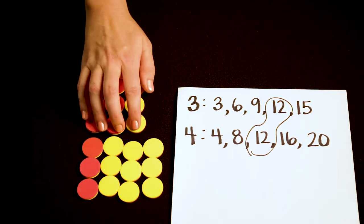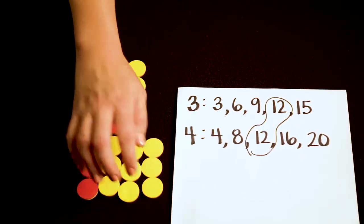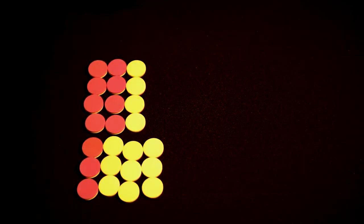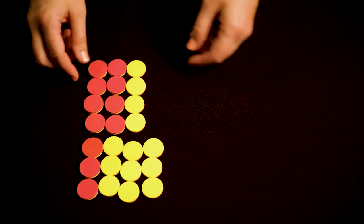Now I need to add 8 twelfths and 3 twelfths. So I'm going to add the counters together but always making groups of 12 because that's my denominator. I'll start right here.